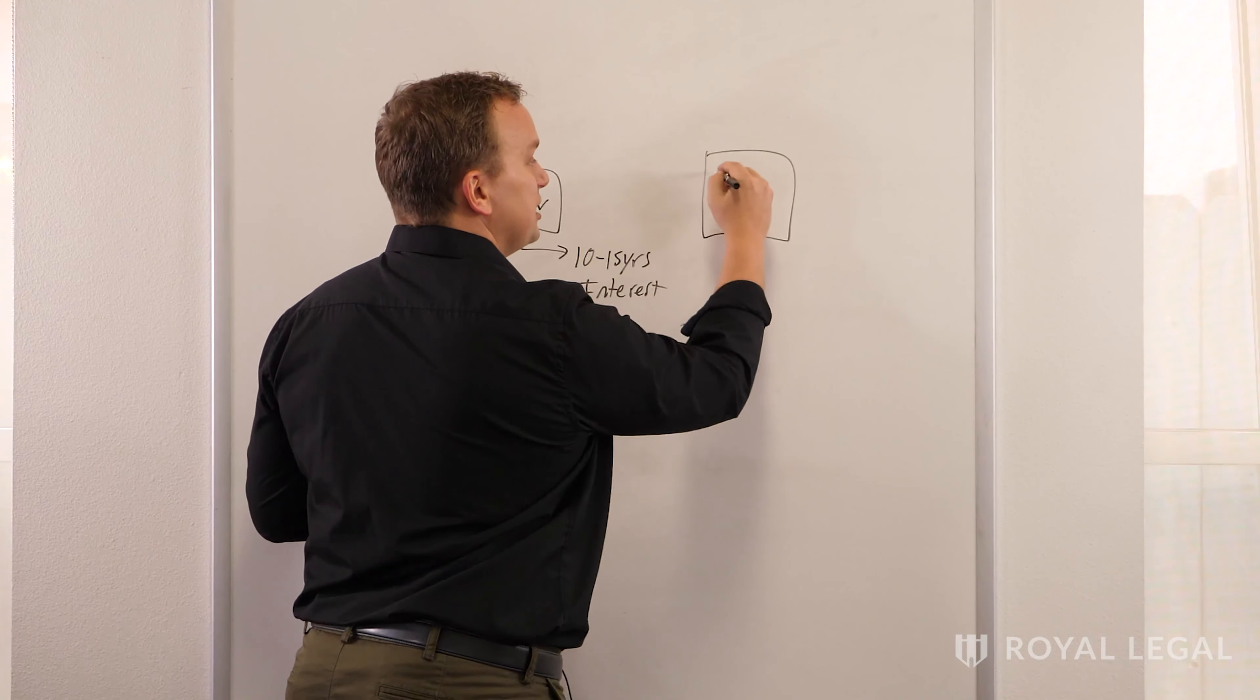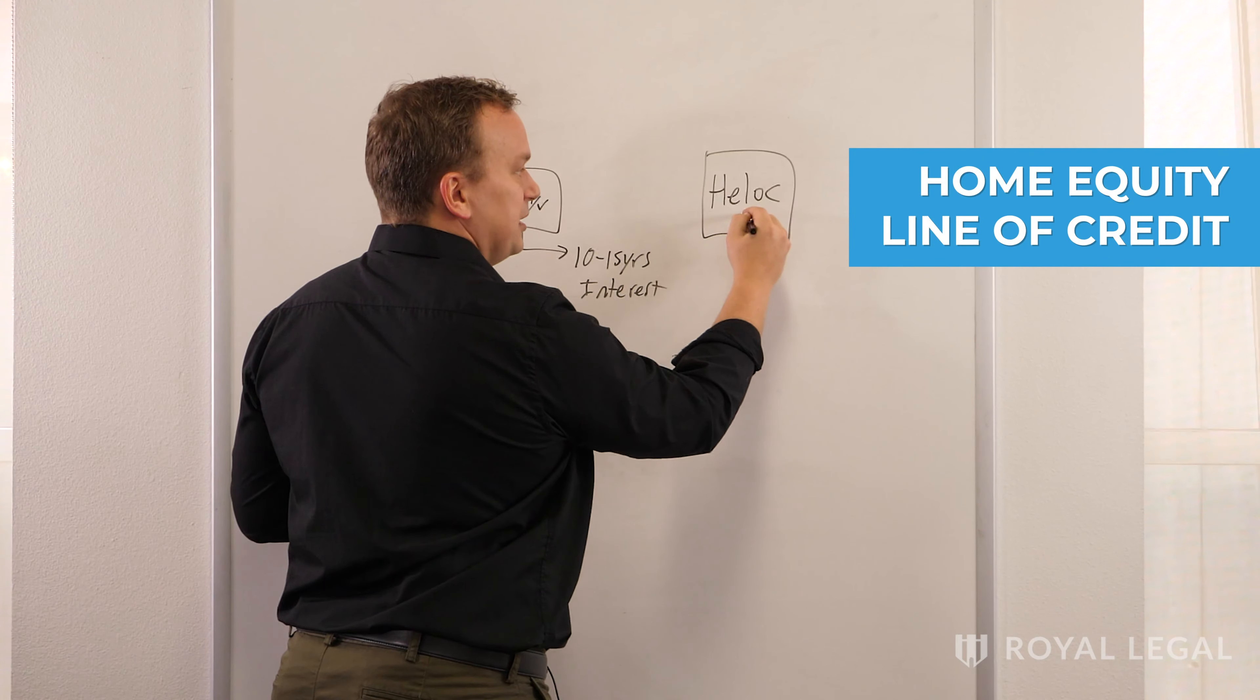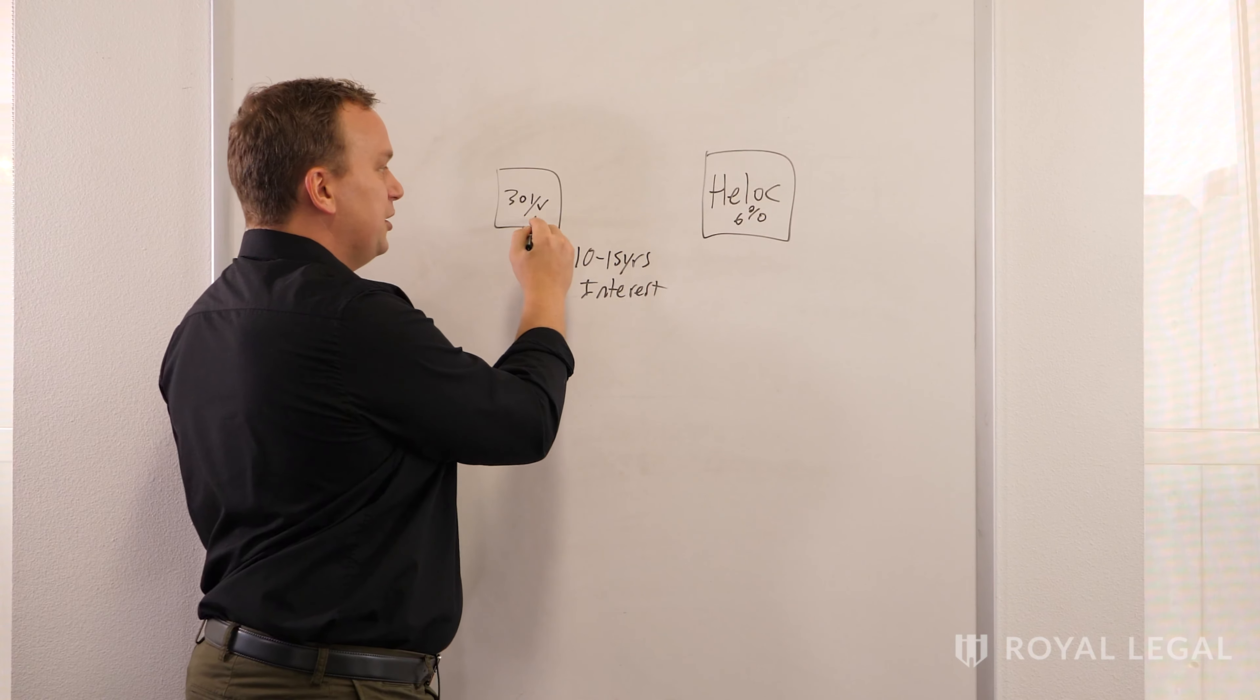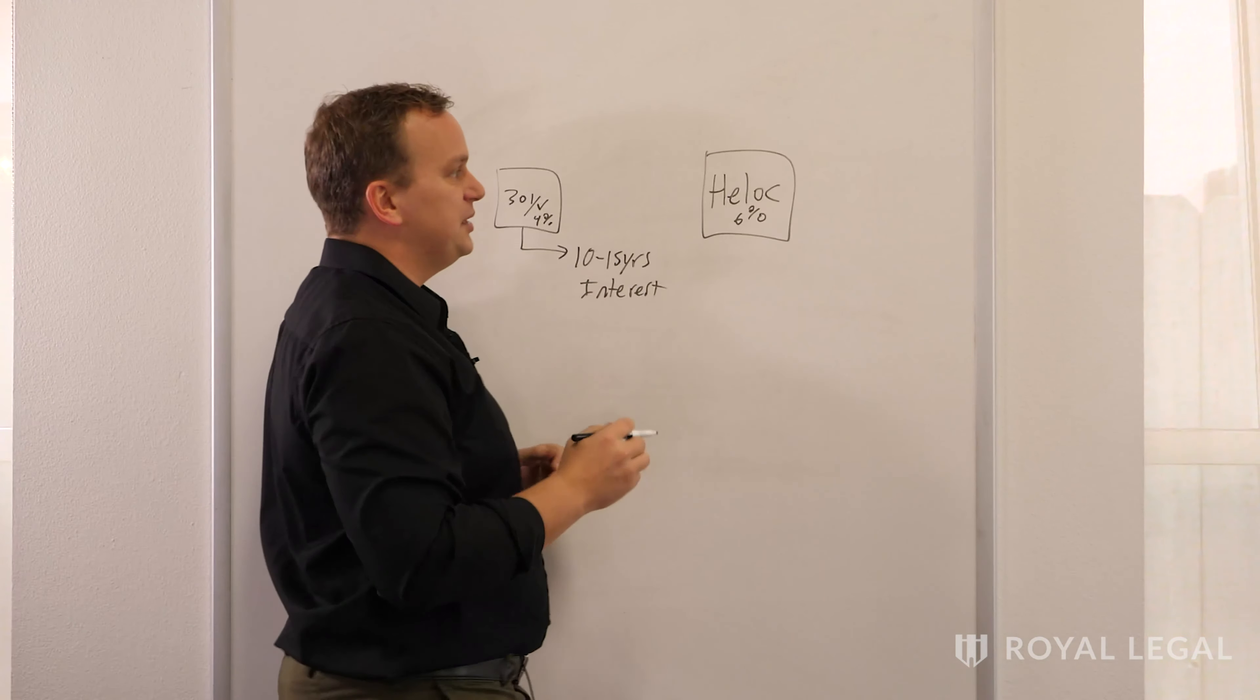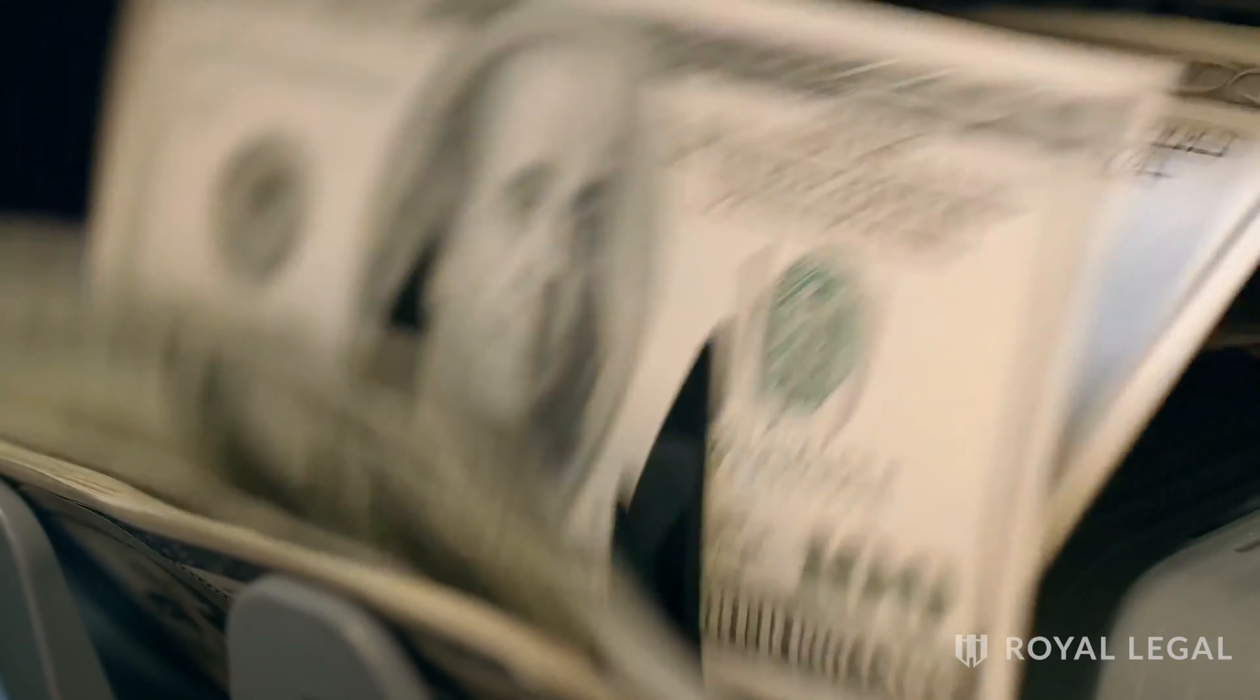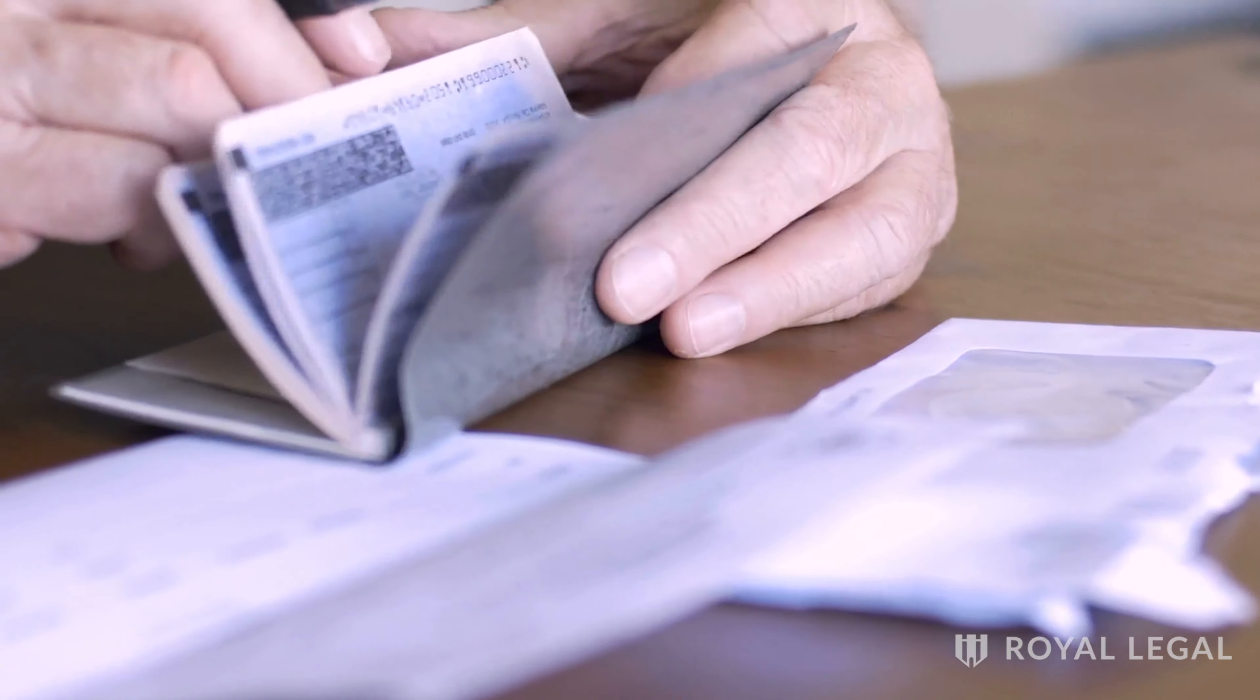You have your home equity line of credit and this might be at something like 6% interest, and this 30-year note over here might be at 4% interest. But this is the vehicle that's going to allow you to pay it off within three to seven years because you're able to take all of the money that you would make and it applies against your home equity line of credit.